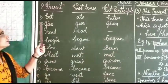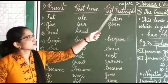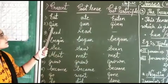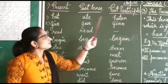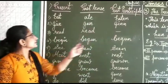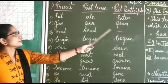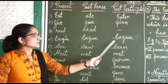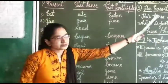First, eat — past tense is ate, past participle is eaten. Present tense is give, past tense is gave, and past participle is given: give, gave, given. Read, read, read. Begin, began, begun. This past participle is used in the present perfect tense.